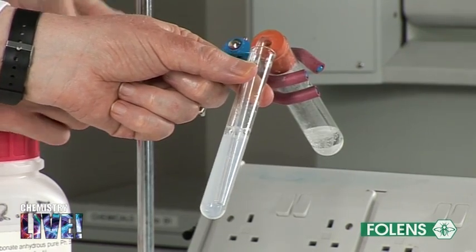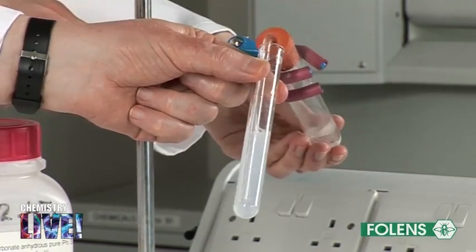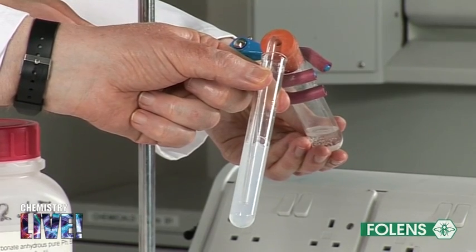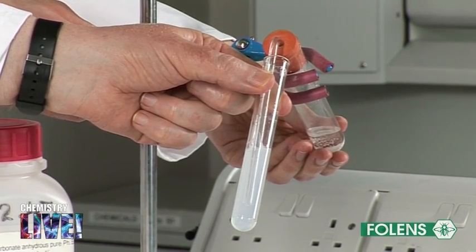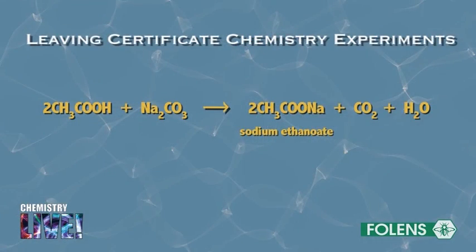From the results of the two experiments, we conclude that carbon dioxide is given off when ethanoic acid reacts with sodium carbonate. The salt sodium ethanoate and water are formed according to the equation shown on the screen.